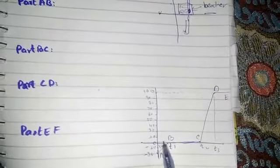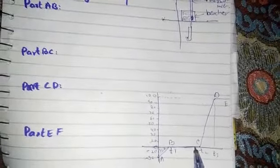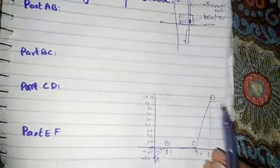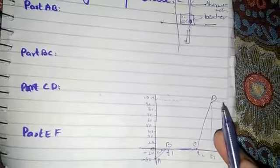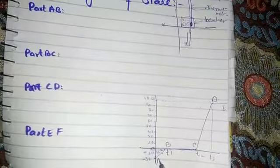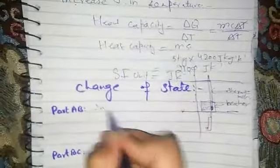We can represent this with a graph. We have ice at minus 30 degrees, then the temperature rises to zero degrees. The temperature remains at zero degrees until all the ice melts into water, and then the water suddenly changes into steam. We represent this with curves: A-B, B-C, C-D, and D-E.